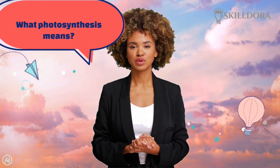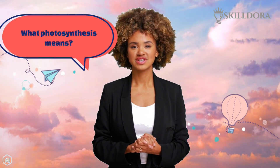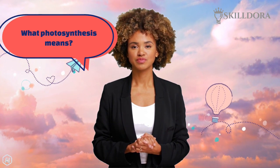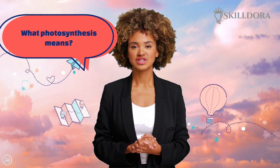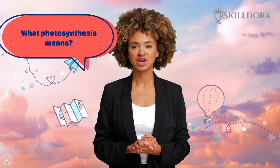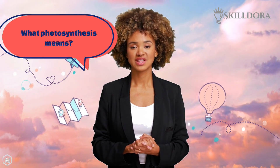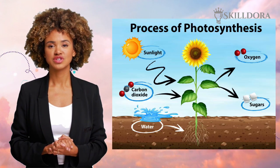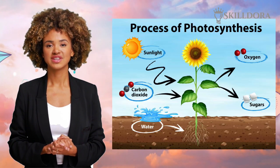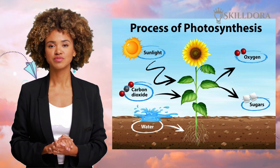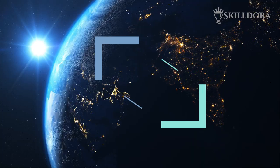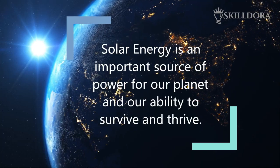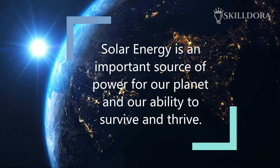By the way, do you remember what photosynthesis means? Photosynthesis is the process by which plants use sunlight, water, and carbon dioxide to create oxygen and energy. So as you can see, solar energy is an important source of power for our planet and our ability to survive and thrive.